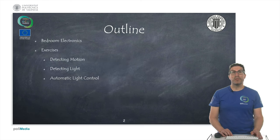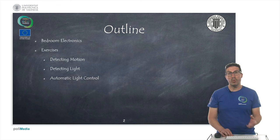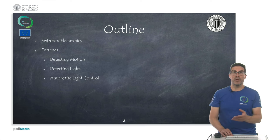So this is the outline of the presentation. I will briefly introduce the electronics of the bedroom and then we will move into three exercises: one for detecting motion and controlling the light, another by detecting the ambient light and also controlling the light, and a final exercise to do some automatic light control by using both motion and ambient light conditions.